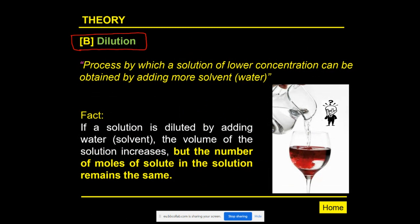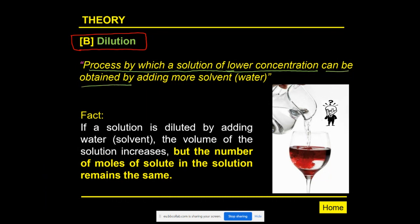Dilution is a process by which a solution of lower concentration can be obtained from a higher concentration solution — a lighter solution — by adding more solvent. When you dilute a solution by adding more solvent, the volume of the solution increases.